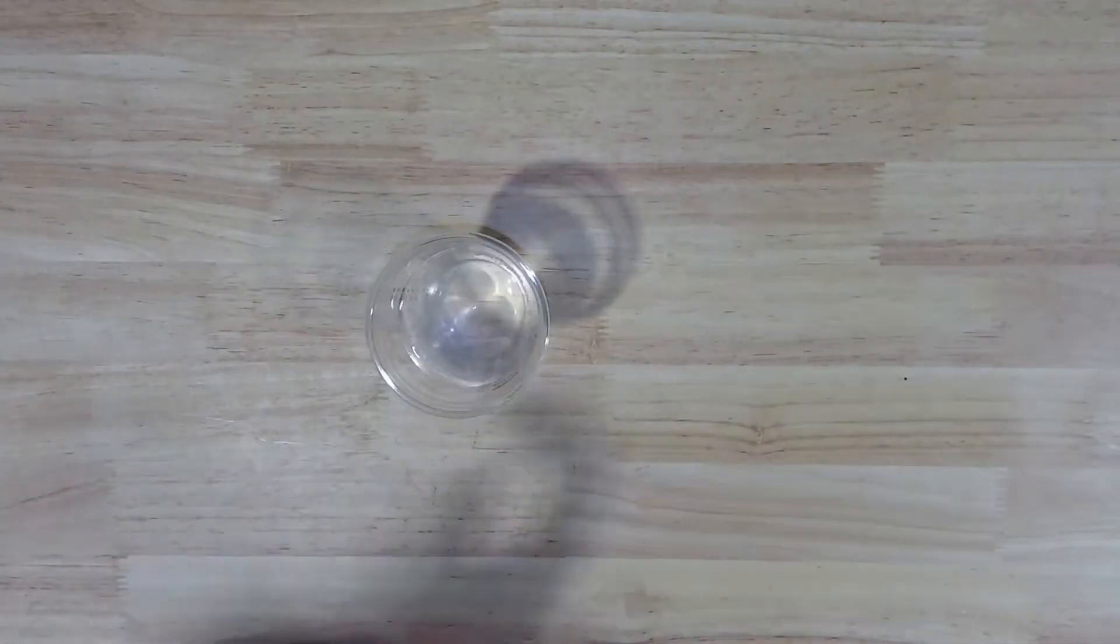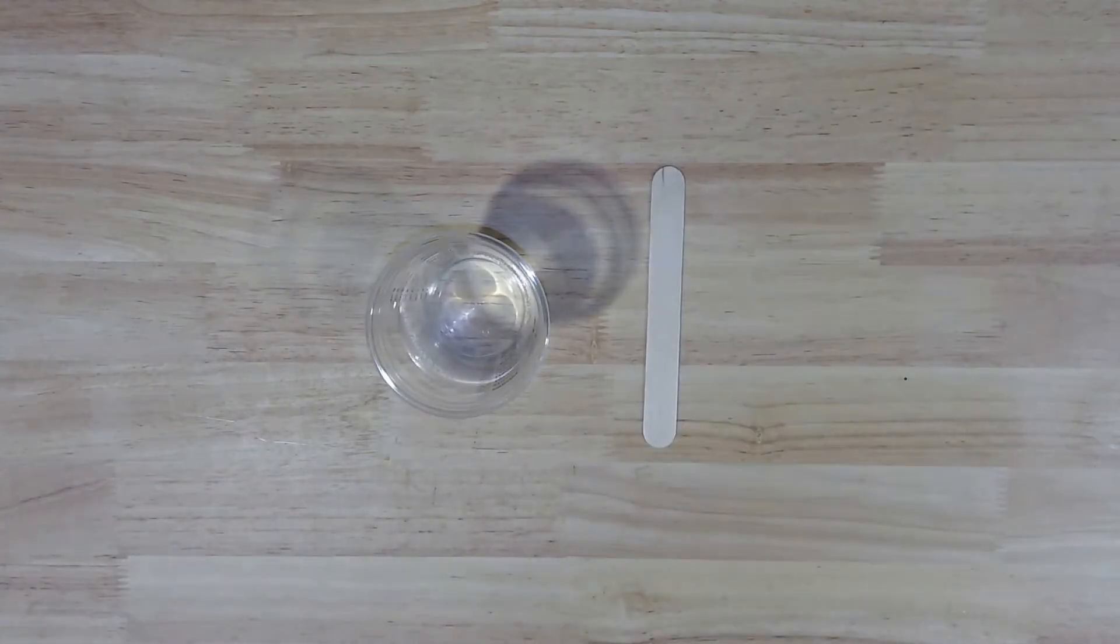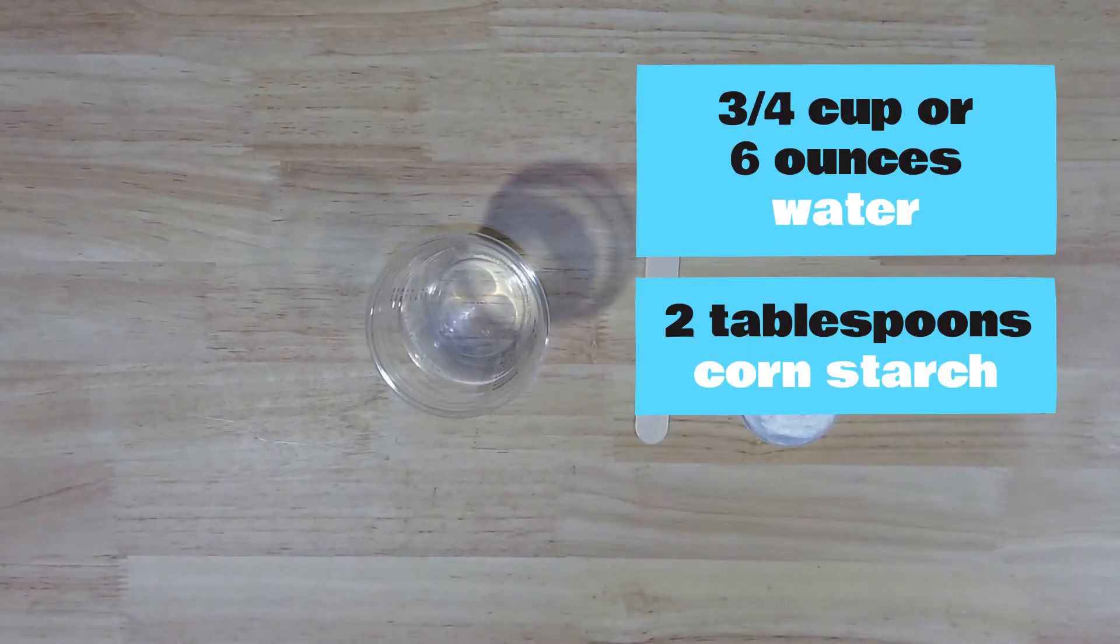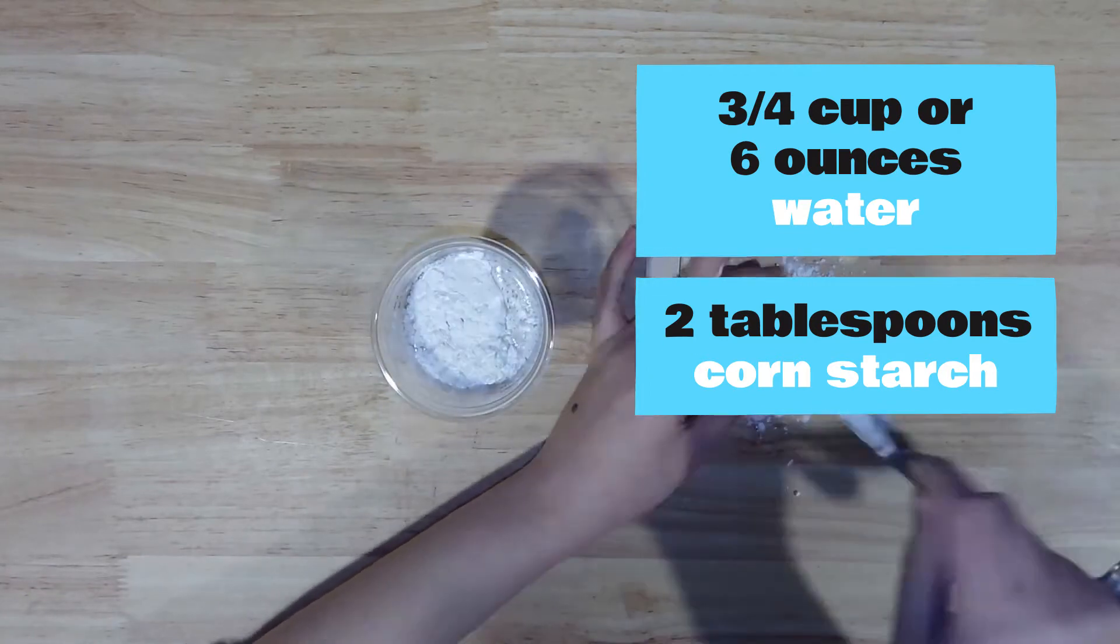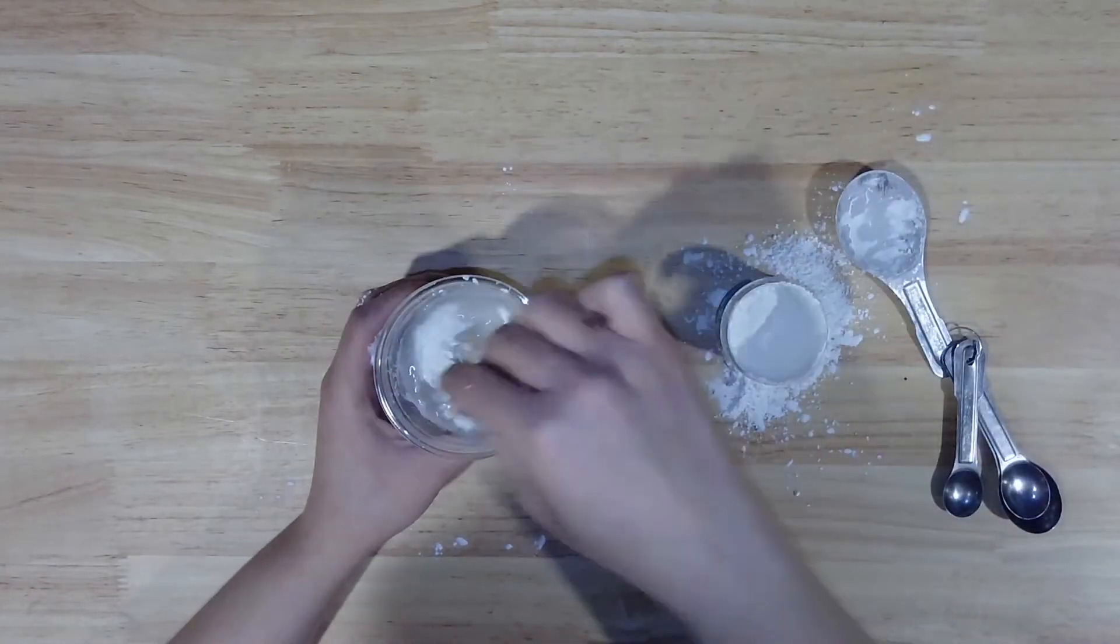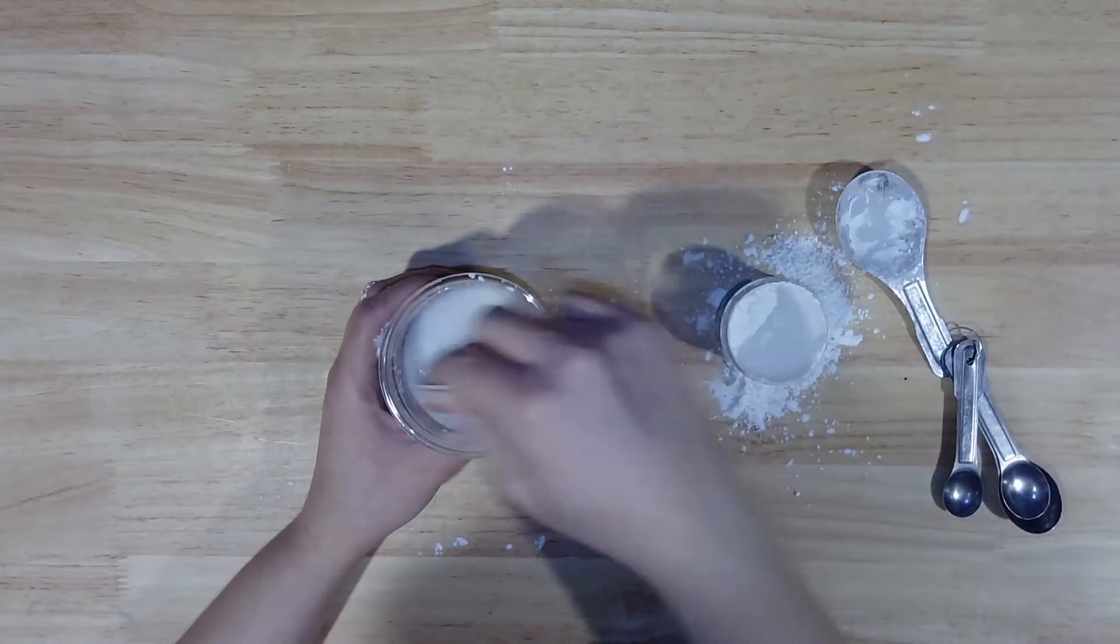While the saucepan comes to a boil, fill your measuring cup with another six ounces or three-quarters of a cup of cold tap water and stir in two tablespoons of cornstarch with your popsicle stick mixer until the consistency is smooth.